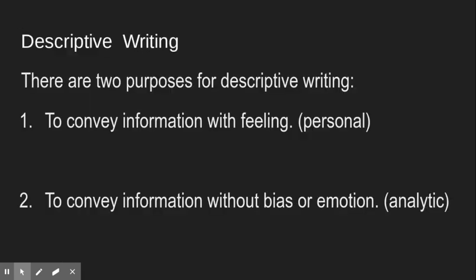There are two purposes of writing a description. The first is to convey with feeling or personal writing — another word we're going to use is subjective. You can write subjectively, which means with feeling. The other reason to write is to write objectively, meaning without any bias or without any emotion.